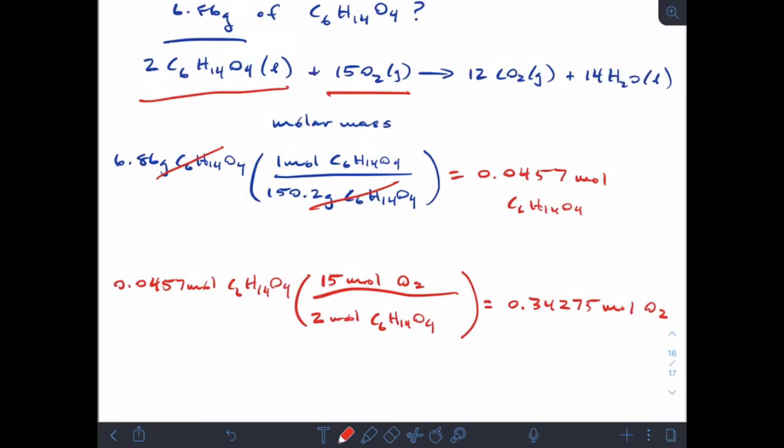And remember we've got to keep track of our sig figs. Those are counting numbers. Right? So we don't have to consider those counting numbers when we're looking for sig figs. So I've got three sig figs in my initial moles so my moles of O2 should also have three sig figs. But I'm not done yet.